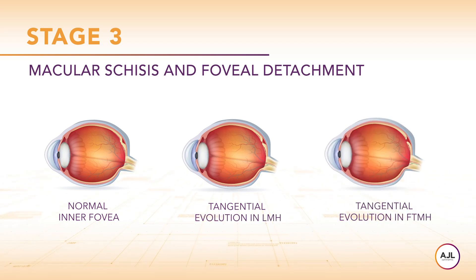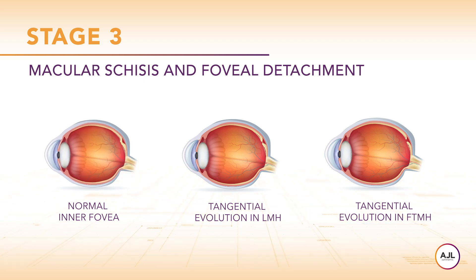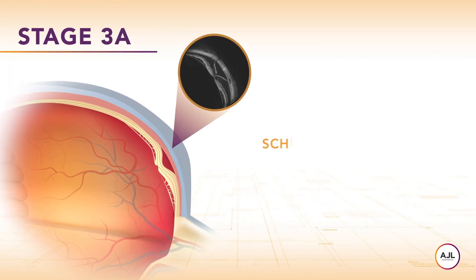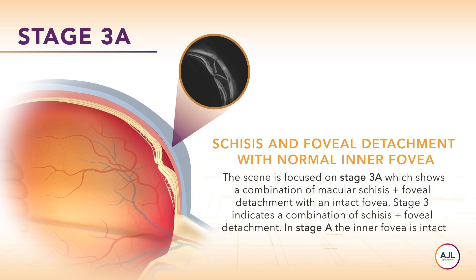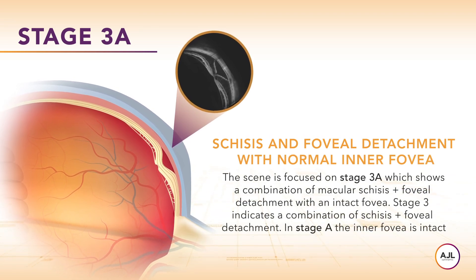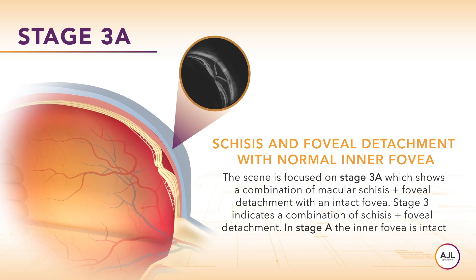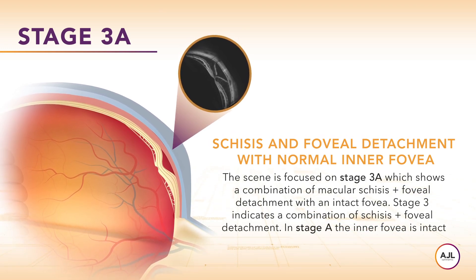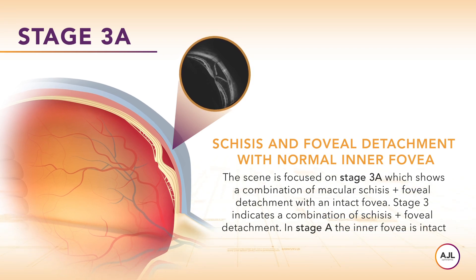The scene represents stage 3, a combination of macular schisis and foveal detachment, and shows the tangential evolution from stage A (intact fovea) to B (lamellar macular hole) to C (full thickness macular hole). Stage 3a shows a combination of macular schisis and foveal detachment with an intact fovea. Stage 3 indicates a combination of schisis and foveal detachment. In stage A, the inner fovea is intact.